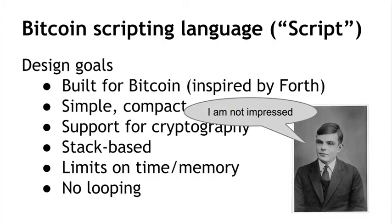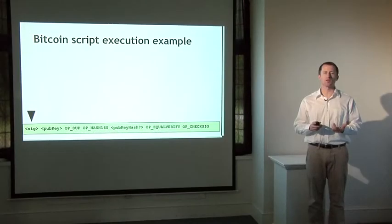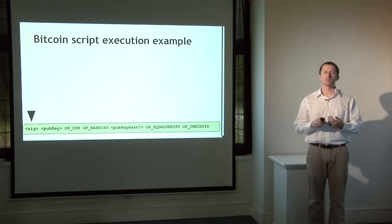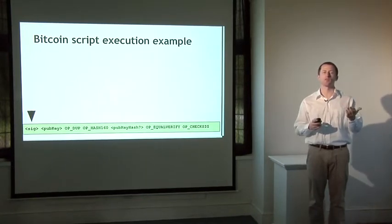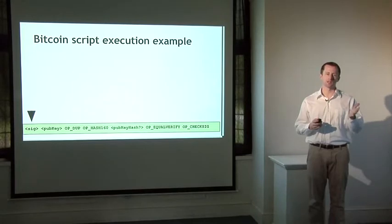Okay, now the fun part. We're going to look at a specific Bitcoin script and exactly how it's executed. This is the same example as before. This is the most common script in Bitcoin, a script where the sender of coins simply specifies the public key of the recipient. And the recipient of the coins, to redeem them, has to specify a signature using that specified public key.